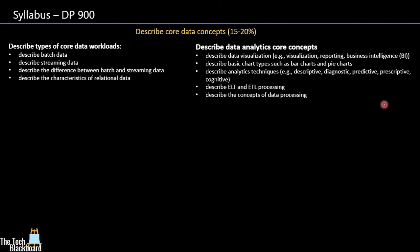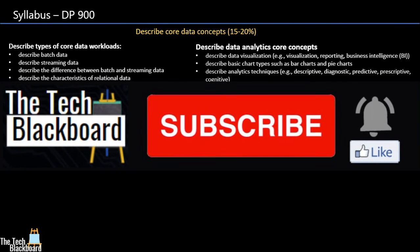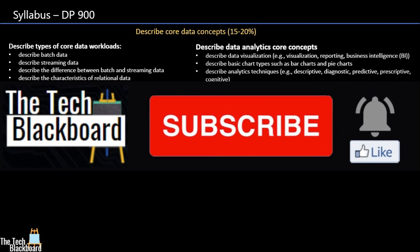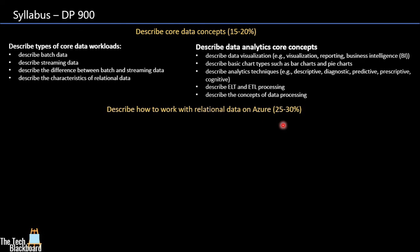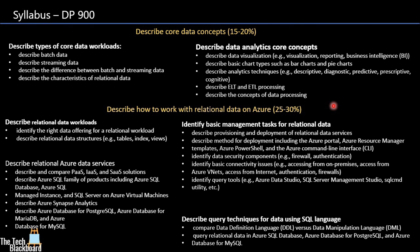Please encourage my efforts by subscribing to the channel. The next area is 'How to Work with Relational Data on Azure,' with a total weightage of 25 to 30 percent — more than the earlier core data concepts area. This section is divided into four subsections: Describe Relational Data Workloads, Identify Basic Management Tasks for Relational Data, Relational Azure Data Services, and Describe Query Techniques using SQL languages.